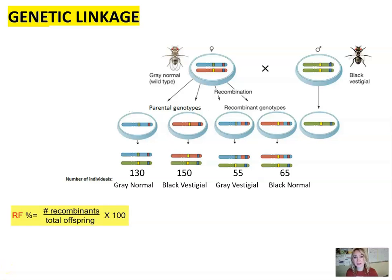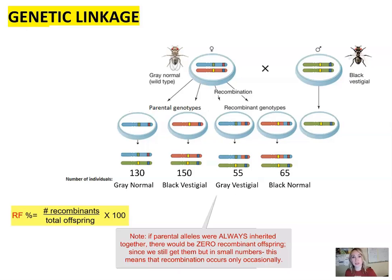Hello and welcome back. In this lesson we're going to discuss genetic linkage. Up until this point we talked about Mendelian genetics and how genes are sitting on separate chromosomes and how these chromosomes sort independently. But now we're going to see that sometimes we do not get the expected ratios — those genes do not sort independently, because they are linked. In other words, they are sitting on the same chromosome, oftentimes very close to one another, and therefore they get to be inherited together.